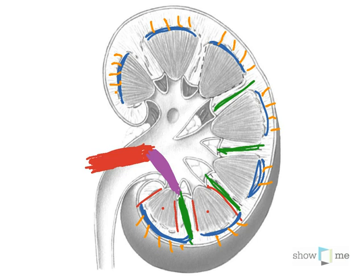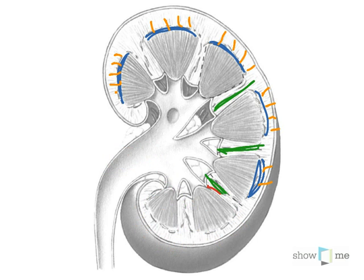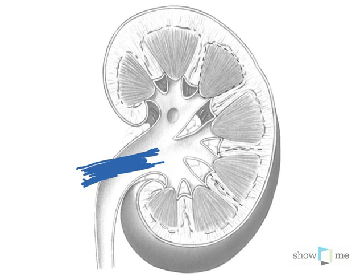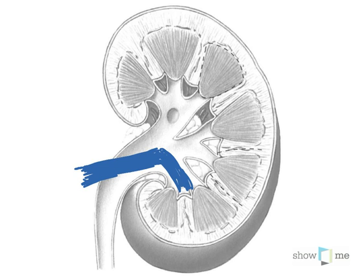Now looking at the veins, we follow the same path. Using blue, we come in with the renal vein. There are some differences — the renal vein will be longer or shorter depending on whether it's a left or right kidney, but we're just looking at where the vessels go. Importantly, there are no segmental veins for the kidneys, so the vein goes all the way through without changing name at that level.